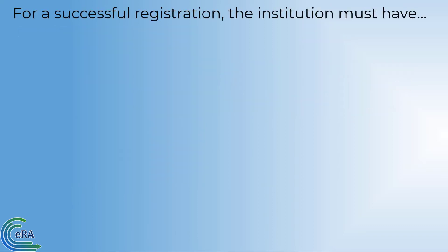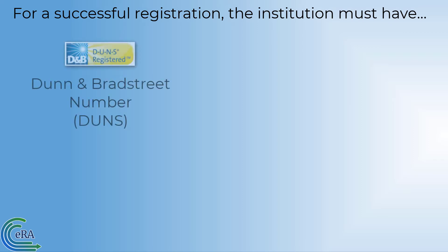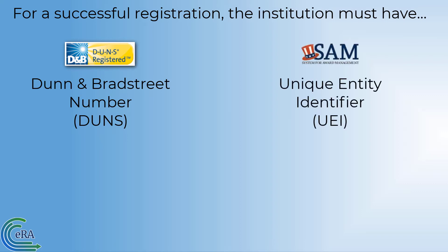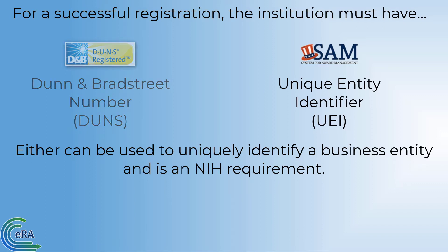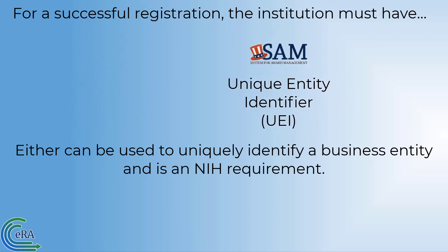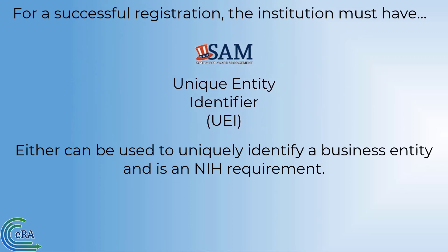Before an institution can successfully register in ERA Commons, it must have a valid and verifiable Dun & Bradstreet DUNS number, or a Unique Entity Identifier, UEI, which is obtained from the System for Award Management SAM registration process. Either of these registrations is used to uniquely identify a business entity and is an NIH requirement. However, the use of DUNS numbers will be discontinued in the near future, so we urge you to acquire the UEI as soon as possible.